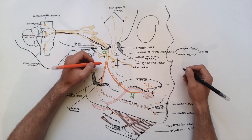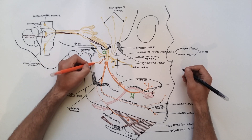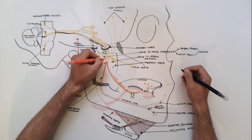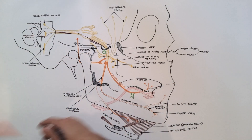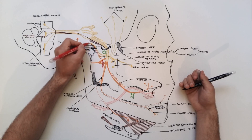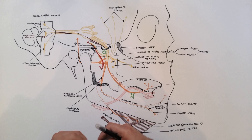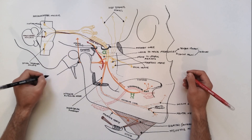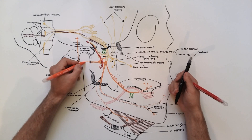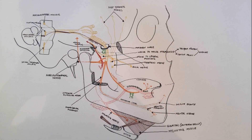The last branch to indicate from the posterior division of the mandibular nerve is the auriculotemporal nerve. This nerve arises by two roots which, after encircling the middle meningeal artery, unite to form a single trunk. It runs backwards medially to the neck of the mandible. Behind the neck of the mandible it turns upwards and ascends over the root of the zygoma to enter the temple behind the superficial temporal vessels. I am indicating using the red color the middle meningeal artery, which is encircled by the roots of the auriculotemporal nerve. The auriculotemporal nerve is a sensory nerve and gives off auricular branches, articular branches that supply the temporomandibular joint, and superficial temporal branches which will supply the skin of the temple.